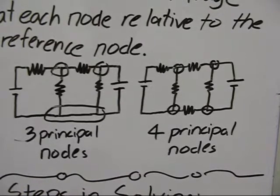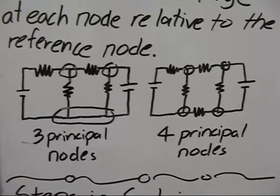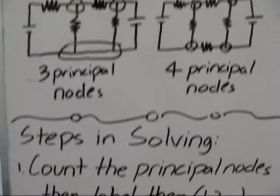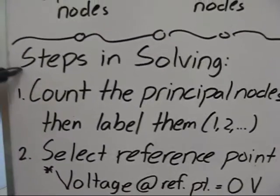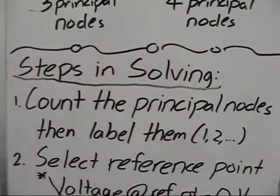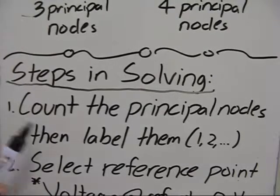This is because there is a resistor separating the node, making it two. So steps in solving: first, count the principal nodes, then label them accordingly.